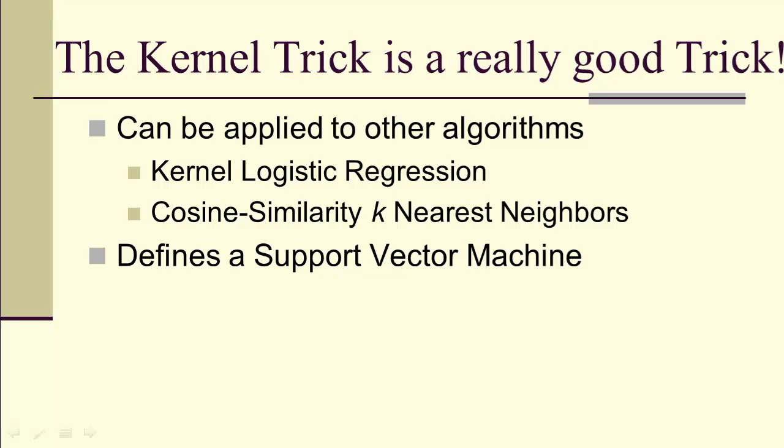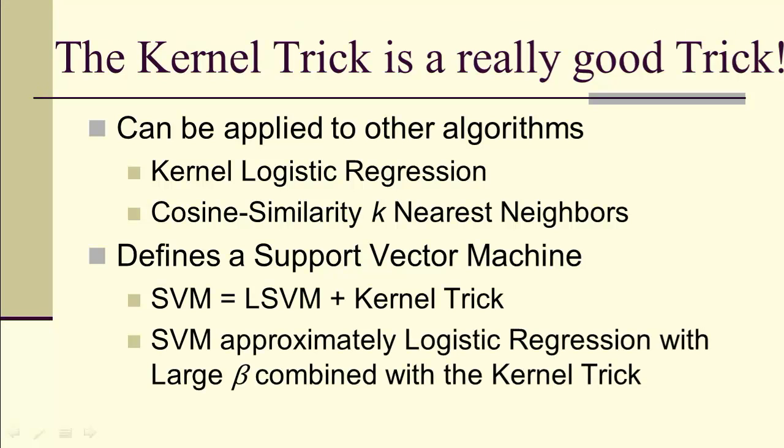When we say a support vector machine, what we really mean is a linear support vector machine plus the kernel trick. And, remember, the support vector machine is approximately logistic regression with a very large beta combined with this really good trick, the kernel trick.